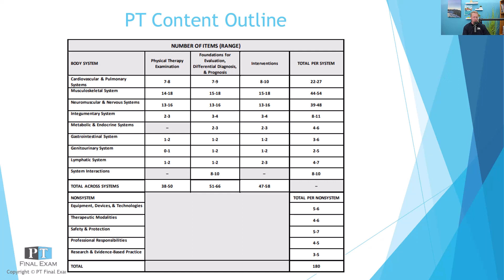As we go through this podcast, we go through each section on the FSBPT content outline, which is representative of what you will experience on test day. I recommend that you study proportionally, meaning that the big three systems — cardio, musculo, and neuro — should account for most of your studies, with all of these other systems and non-systems taking up the balance. Make sure you're studying very proportionally.